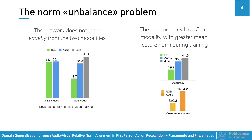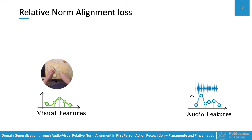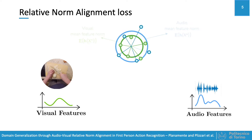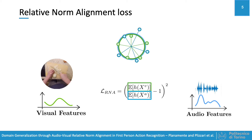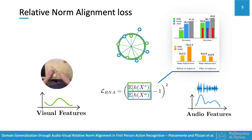To deal with this problem, we propose a new Relative Norm Alignment loss. Given the visual and audio features, we know that the mean feature norms will be different. We propose a new loss that reduces the discrepancy between the mean feature norms of the two modalities, bringing their ratio to 1. By rebalancing the contribution of the two modalities during training, we increase the generalization ability of the model.